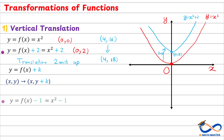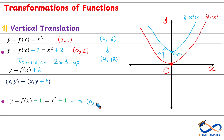When we subtract a number instead of adding, it will be a translation of 1 unit down. Here we have f of x minus 1; f of x is x squared, so it becomes x squared minus 1. If you replace x by 0, y will be 0 minus 1, which is negative 1, and this point (0, −1) will be here.